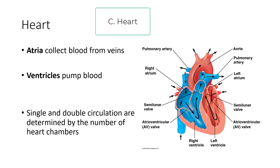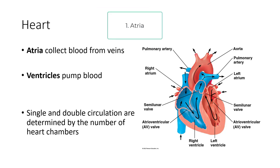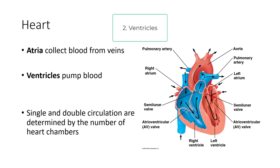Speaking of the heart, we have two different types of chambers. First are the atria — the right atrium and the left atrium — which collect blood from the veins and pump it into the ventricles. The ventricles have more musculature and pump blood under higher pressure, either to the pulmonary circuit, including the lungs, or to the systemic circuit, including the rest of the body.